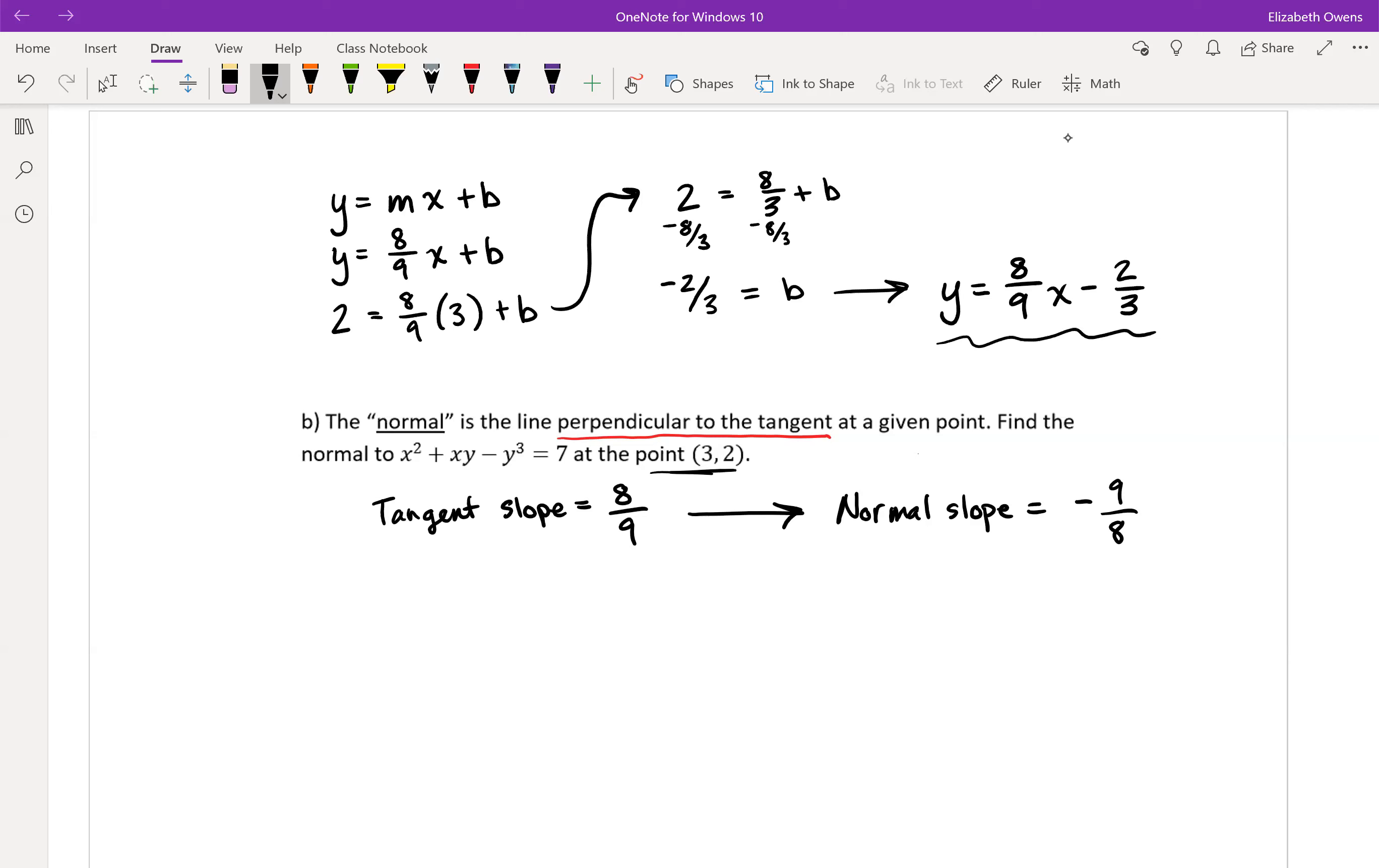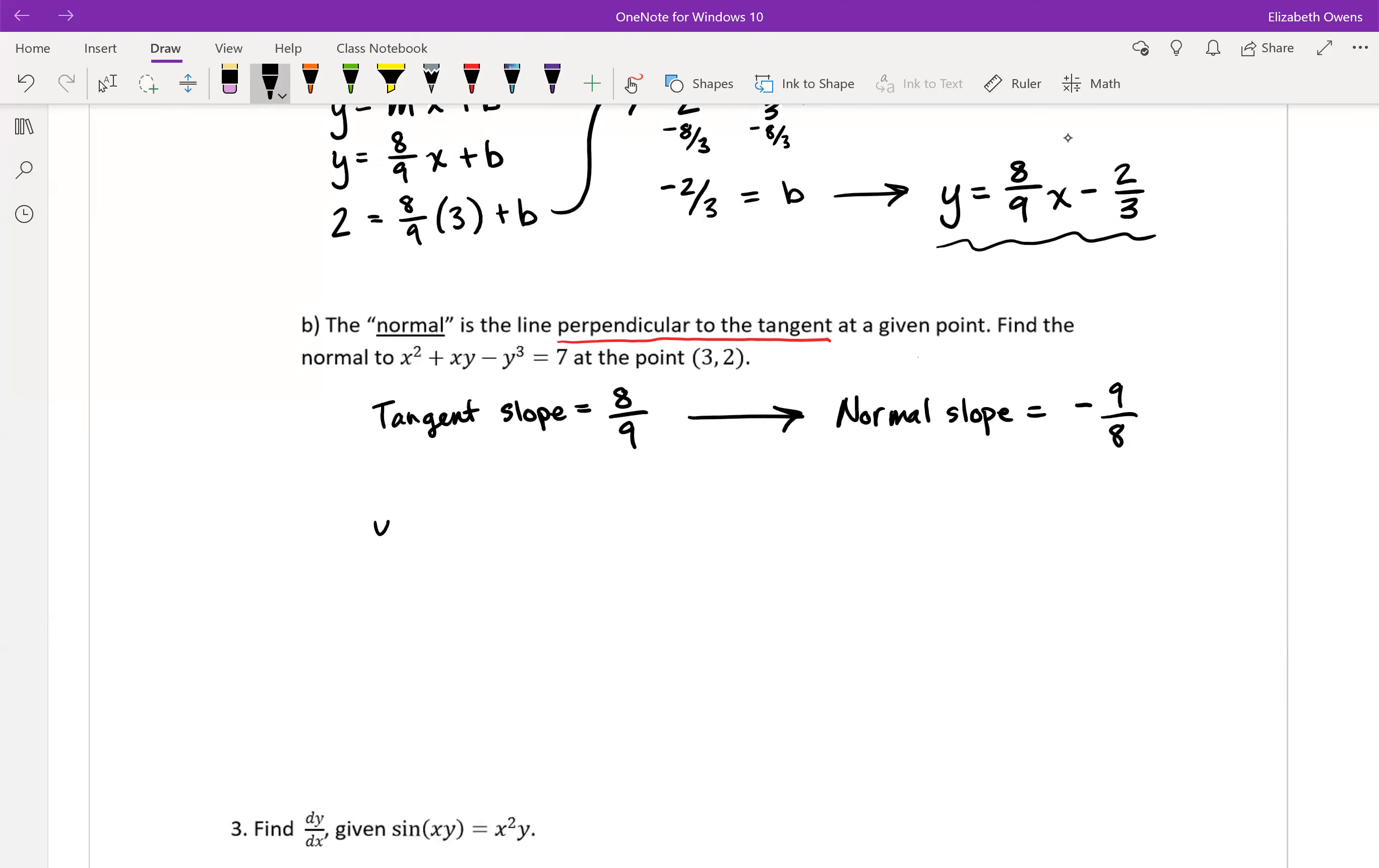We're still at the point (3, 2), so we're going to make the equation of a different line. y = mx + b, but now our slope m is -9/8. We're still going to plug in the same point values: 2 = -9/8(3) + b.